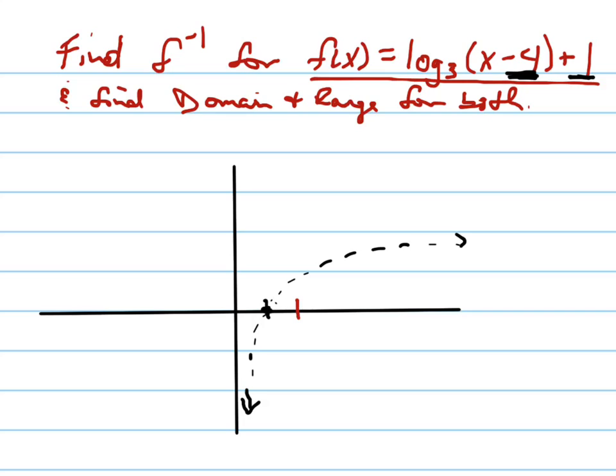So I'm taking this, and I'm going to the right 4, 1, 2, 3, 4. And so now my asymptote is that line, which is what? X equals 4. There's my asymptote. That's going to help me with my domain and range, right?